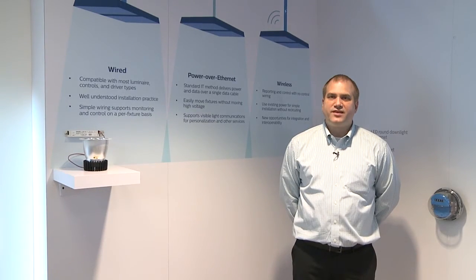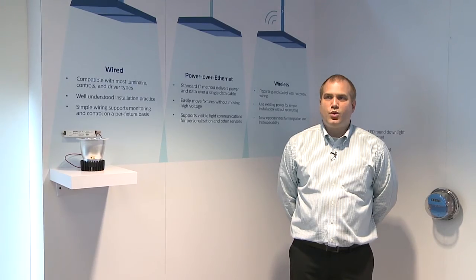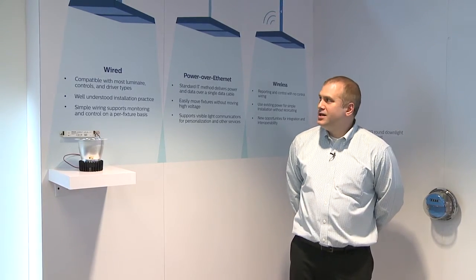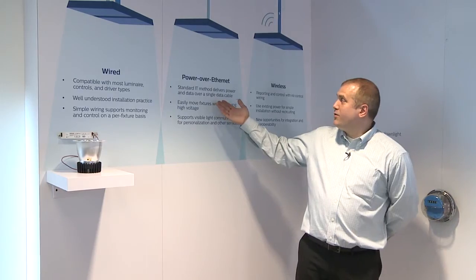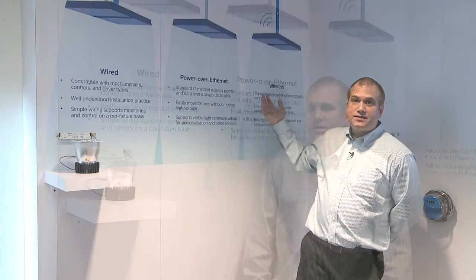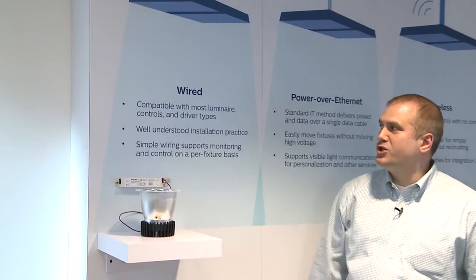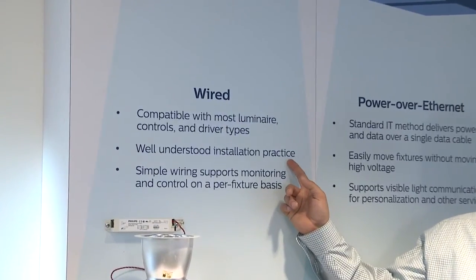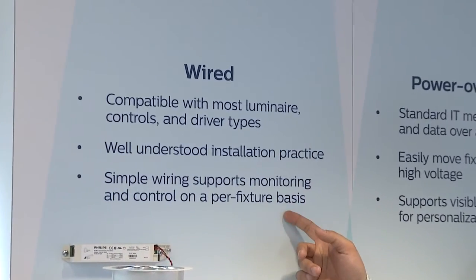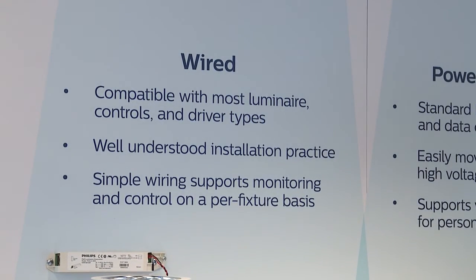One of the advantages of the Philips Envision Manager system is that we're not tied to one architecture to connect lights. We can connect lights via wired, Power over Ethernet, and wireless. The wired architecture allows compatibility with the most luminaires, controls, and drivers. It's a well-understood installation practice and allows for simple wiring, and supports monitoring and control on a per-fixture basis.